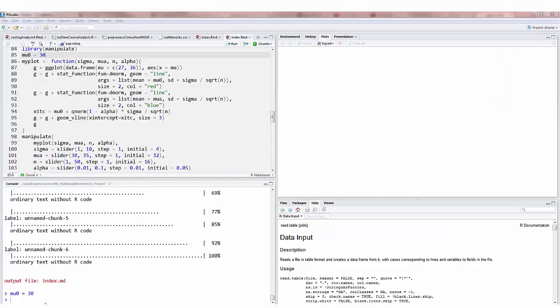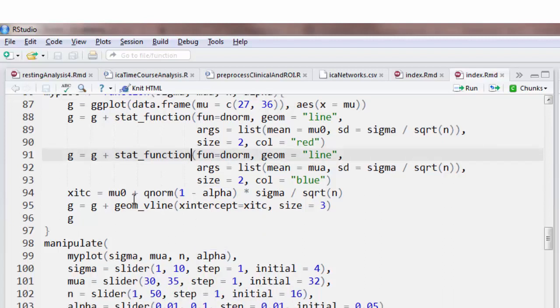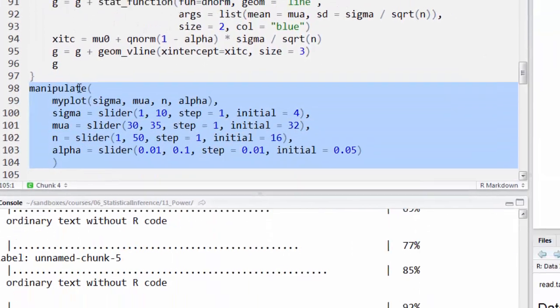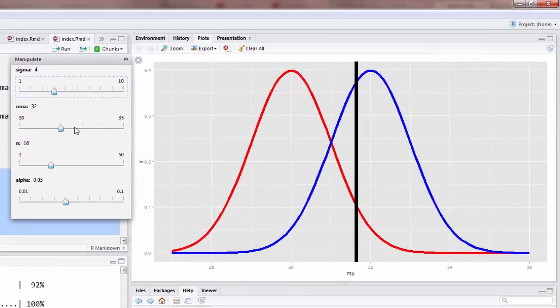Let's use RStudio's manipulate function to evaluate power as it relates to the two normal densities. So here I'm going to do library manipulate, then I'm going to define mu-naught to be 30. Then I'm going to define a plotting function that depends on the population standard deviation, the mean under the alternative, the sample size, and the type one error rate. Then it does ggplot. So then it's going to execute that plot, but it's going to give me a slider so that I can vary all these parameters. Let me first describe these two plots before we start using the manipulate function. Currently the parameters are set at the values we used in the previous calculations. Sigma was 4, mu-a was 32, n was 16, and alpha was 5 percent.